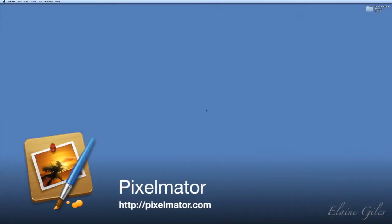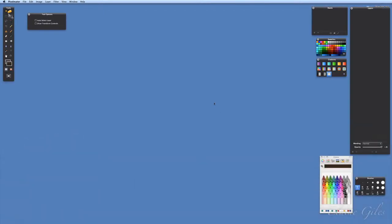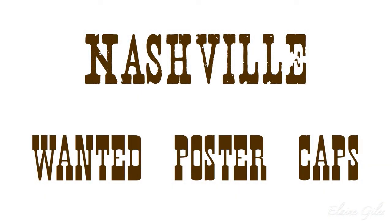I'm heading off into Pixelmator. I have installed two specific fonts. What I'm going to do is make a poster — a fun way of demonstrating and showcasing your photos; it works really well with kids. There are lots of genres that work well: circus posters, concert posters. I've gone for a wanted poster. The two fonts are both free — one is called Nashville and the other is called Wanted Poster. There'll be links in the resource pack. They're just TrueType fonts, very simple to install.